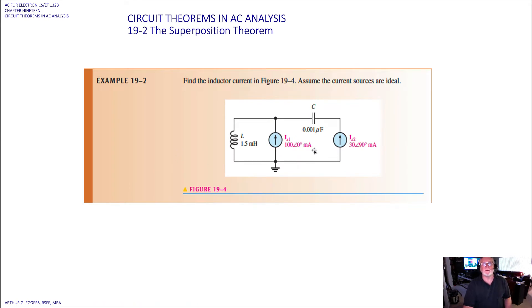Let's take a look at a couple more examples. Now we have a circuit that has two current sources in it and we will apply the rules to do a superposition theorem analysis on this circuit to find the inductor current.